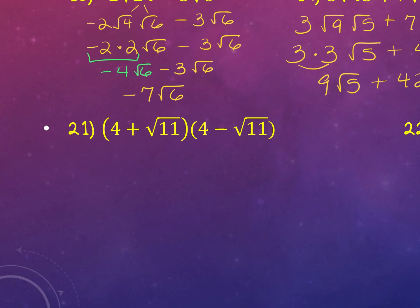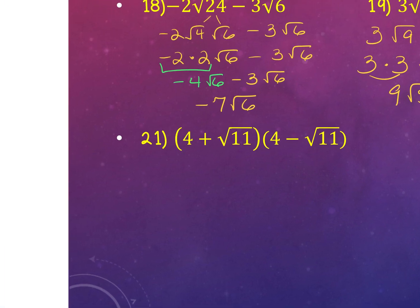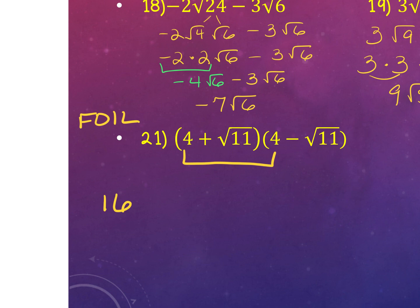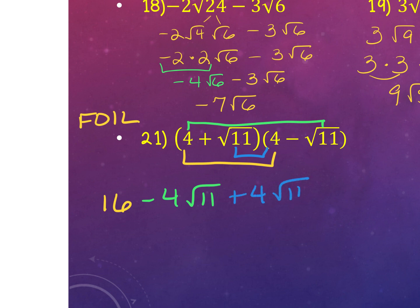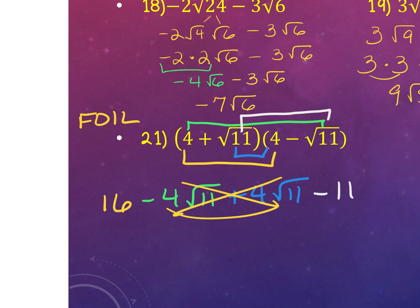For the next one, we're multiplying two binomials. You can use FOIL or the distributive property. Distribute 4 to 4: get 16. Distribute 4 to negative square root of 11. Then distribute square root of 11 to 4. Finally, multiply square root of 11 times negative square root of 11 — it's a pair, and 11 comes out. The middle terms cancel out, leaving 16 minus 11, which equals 5.